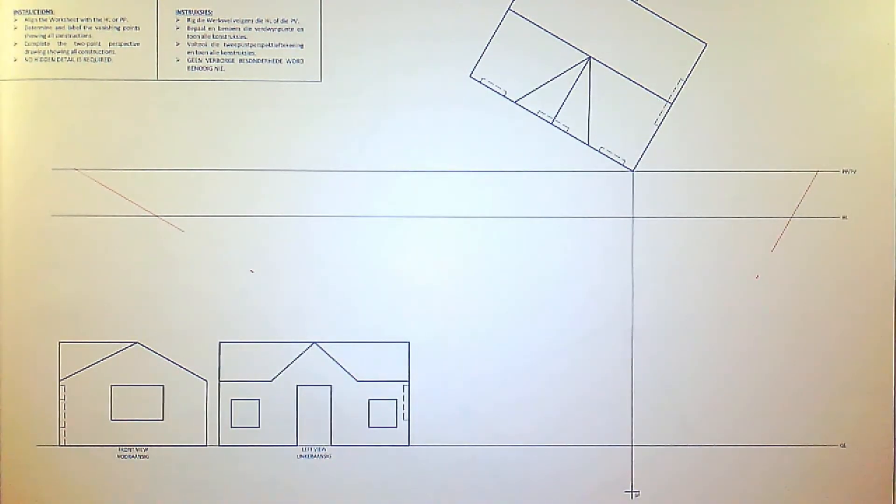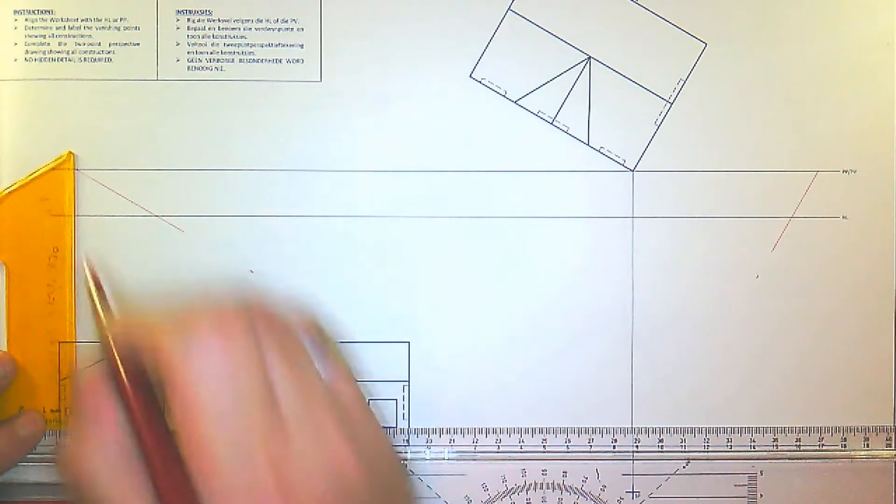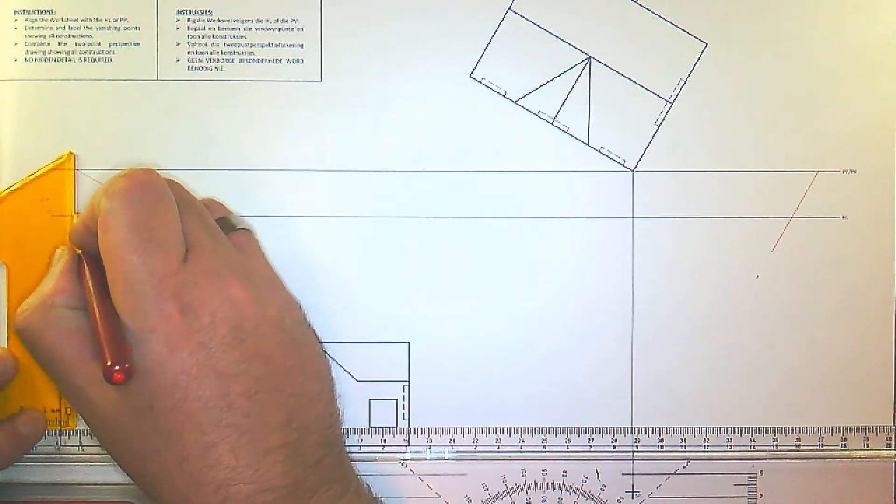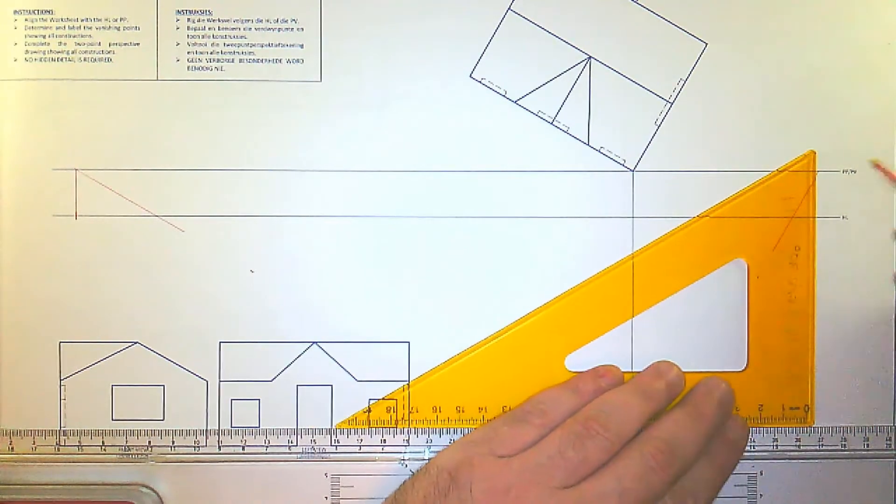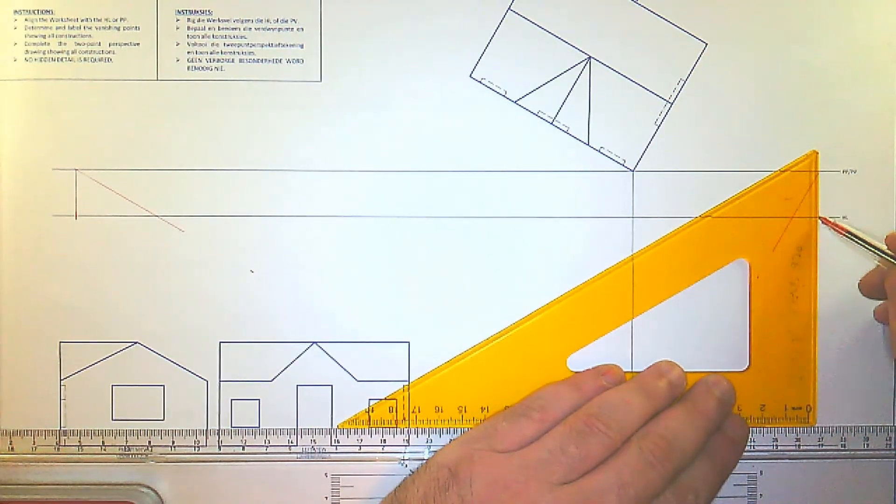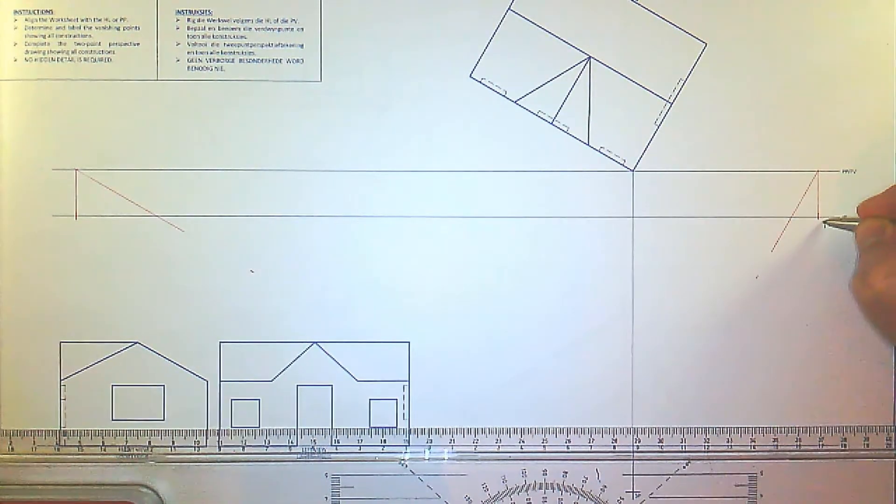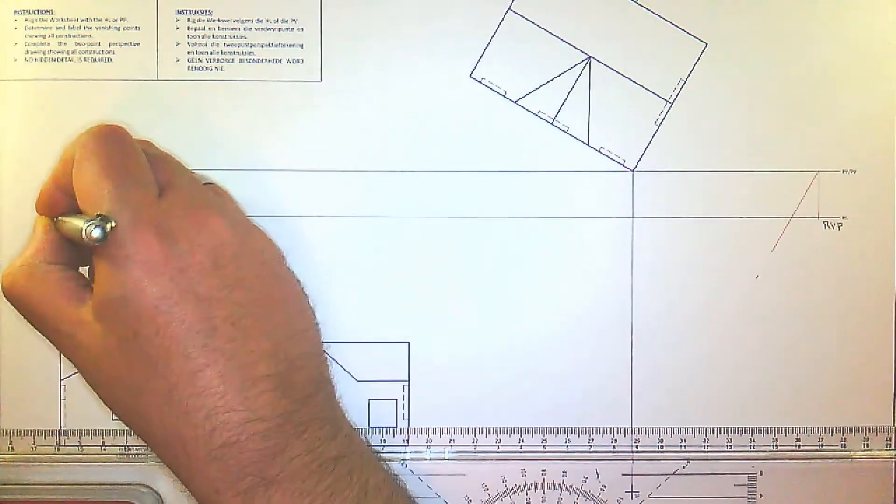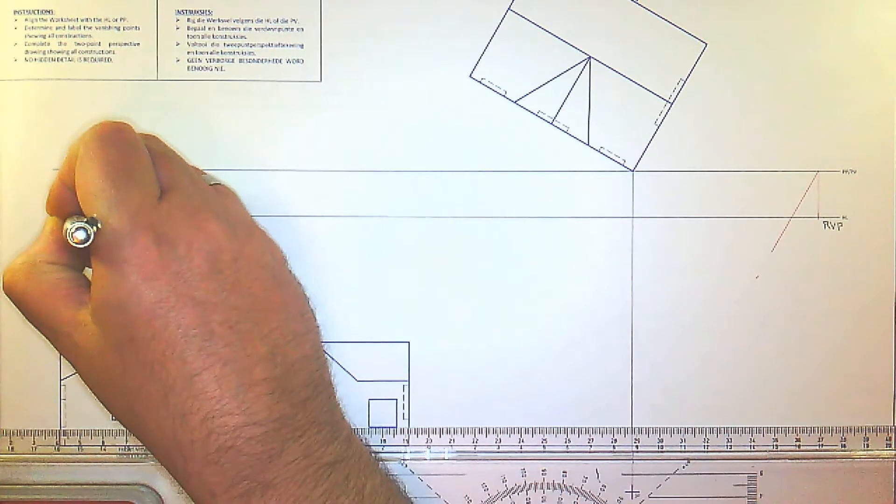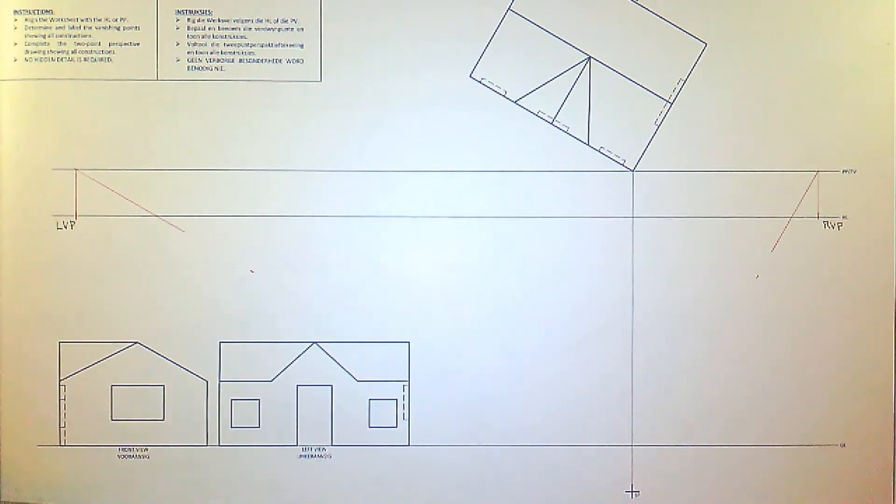And then you go straight down to your horizon line to mark down both vanishing points. It's very important that you label them as well, so this will be your right vanishing point and this will be your left vanishing point.